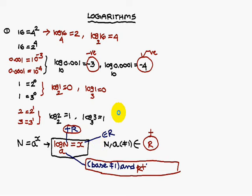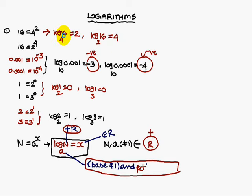Also, x can be any real number. If you observe the examples, log 16 base 4 is 2, and log 16 base 2 is 4. The number is 16 in both cases, but the logarithm values are different. So you can conclude that the logarithm of a number to different bases are different.